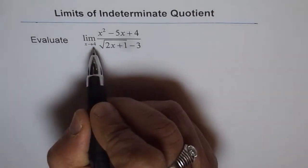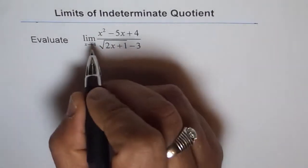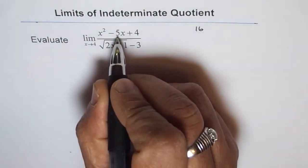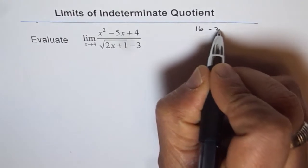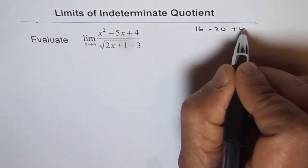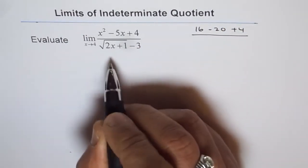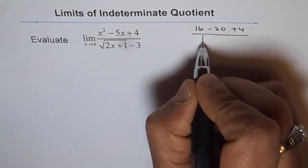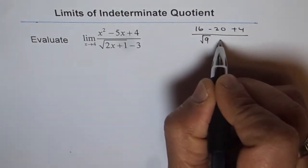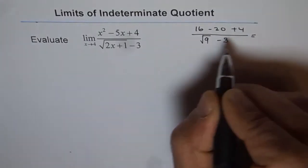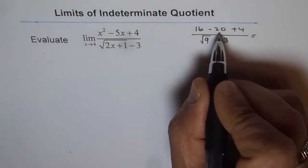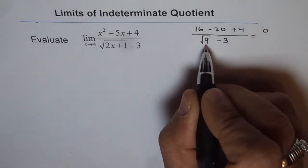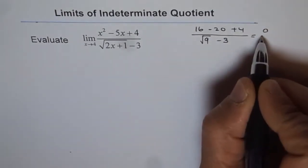If we substitute 4, we get 4 squared which is 16, minus 5 times 4 is minus 20, plus 4. In the denominator, 2 times 4 is 8, plus 1 is 9, so we have square root of 9 minus 3. Now 16 minus 20 plus 4 is 0, and square root of 9 is 3, so 3 minus 3 is also 0.